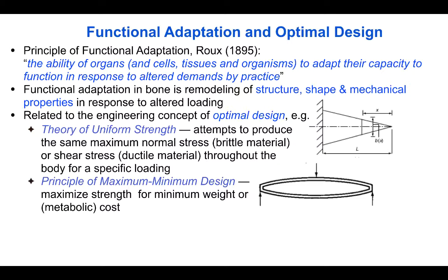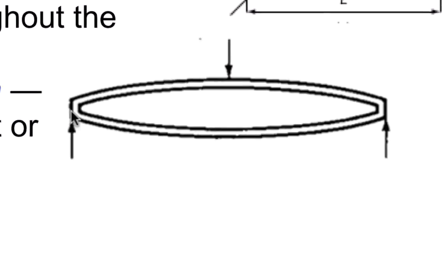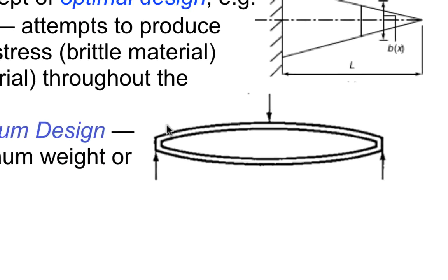The principle of maximum-minimum design maximizes one property, such as strength, to minimize another, such as weight or, in biological tissues, metabolic cost. So here, for example, we see an optimal beam cross-section design where we get high bending rigidity for low mass.